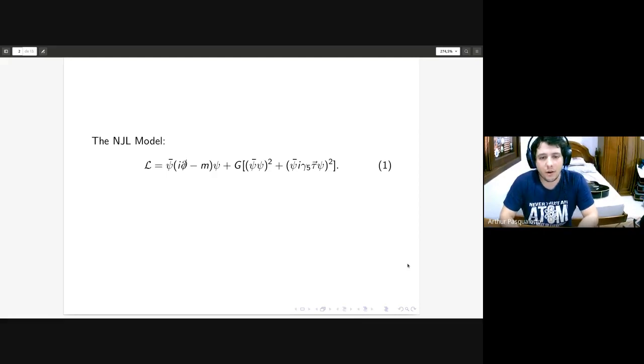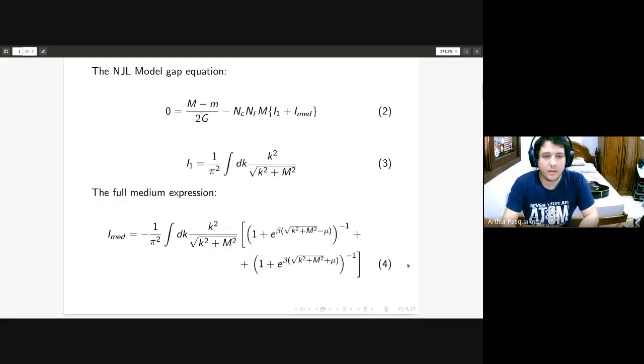One of the key components that describes this system is the gap equation. The NJL gap equation is equation number two, and this equation is used to calculate the value of the effective mass that is generated through a mechanism we call chiral symmetry breaking. This effective mass is generated through this interaction of the quarks and this broken symmetry.